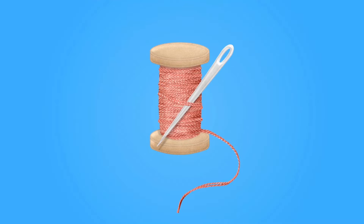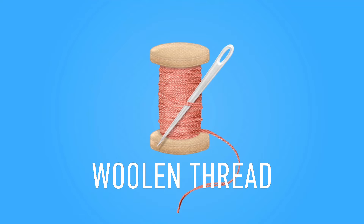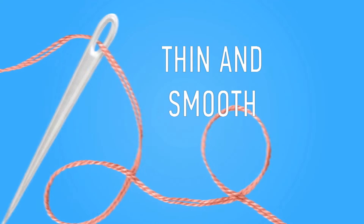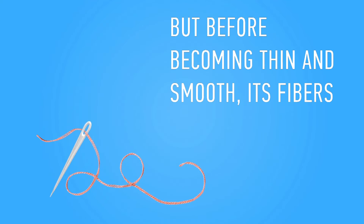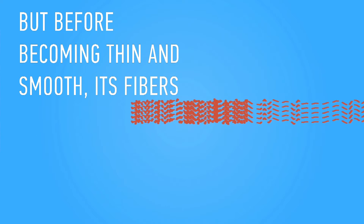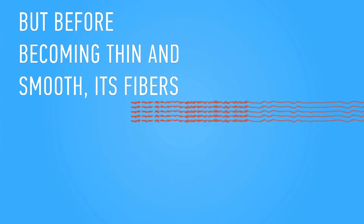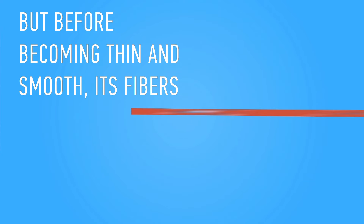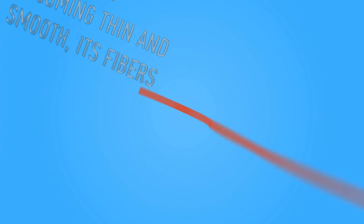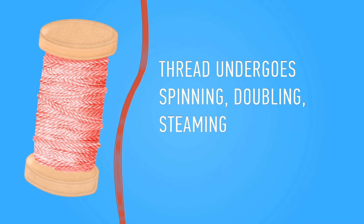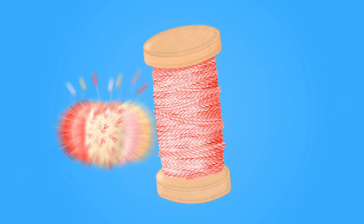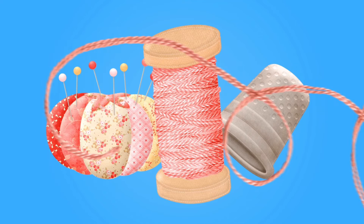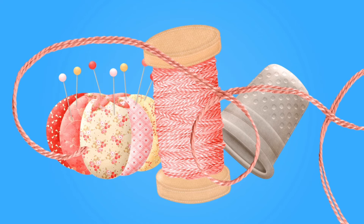One would think a woolen thread is such a simple thing, thin and smooth. But before becoming thin and smooth, its fibers are stretched out, combed, steamed, spun — meaning a few strands are twisted into one. The thread undergoes spinning, doubling, and steaming. But apparently we should start over without the tricky terminology.